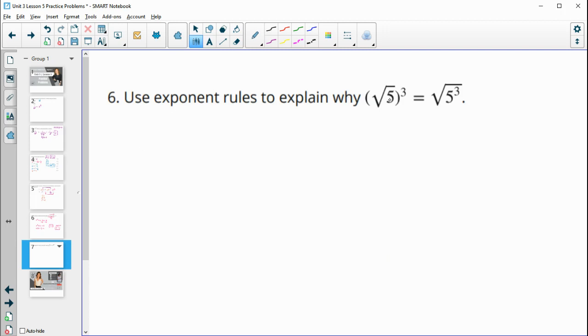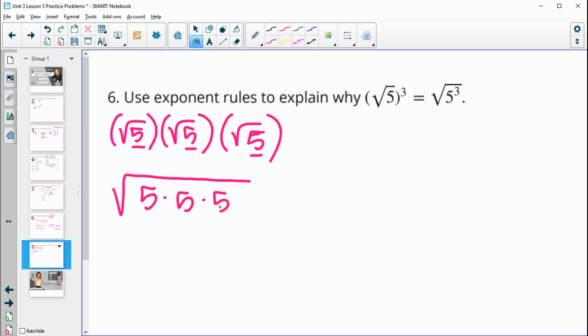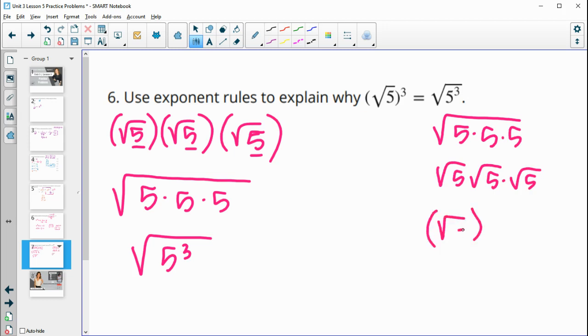Number 6, use exponent rules to explain why the square root of 5 to the 3rd is equal to the square root of 5 to the 3rd. So if we kind of just rewrite out this exponent rule here, square root of 5 three times. So square root of 5 times square root of 5 times square root of 5. We could multiply these all together inside of a radical since these are all the same radical. So then this is going to be the square root of 5 times 5 times 5, which will end up being the square root of 5 cubed. So then that's kind of the same thing there. You could also kind of do it this way where you've got this one is 5 to the 3rd power. So then we could split this up with the radicals. And then we would end up with the square root of 5 three times.